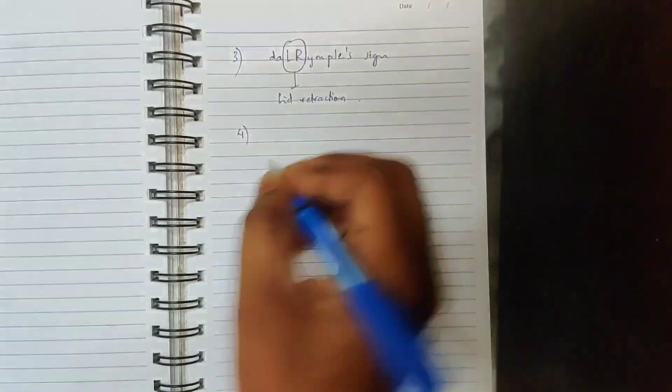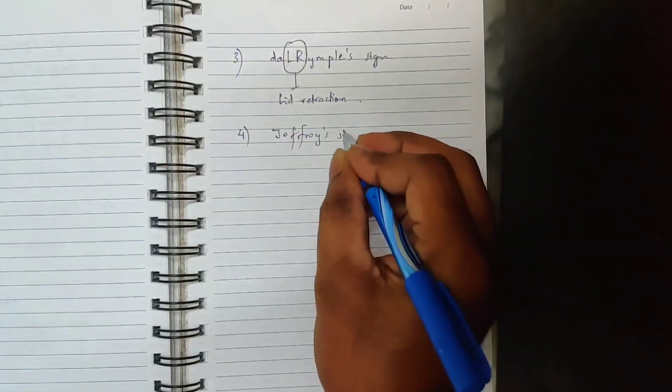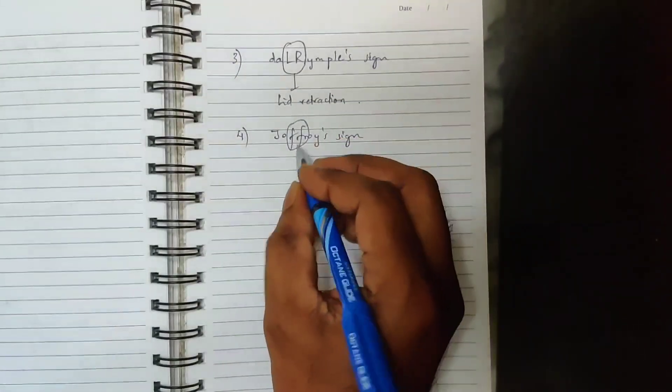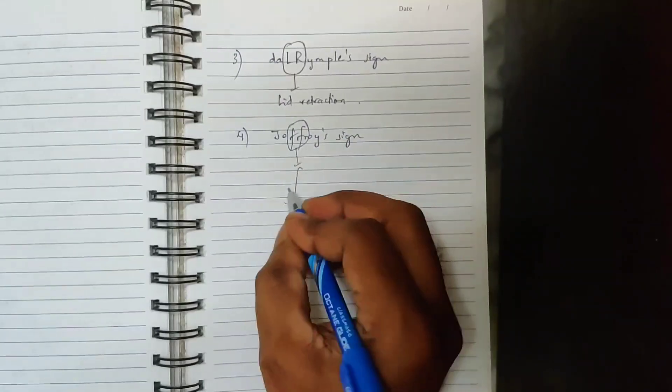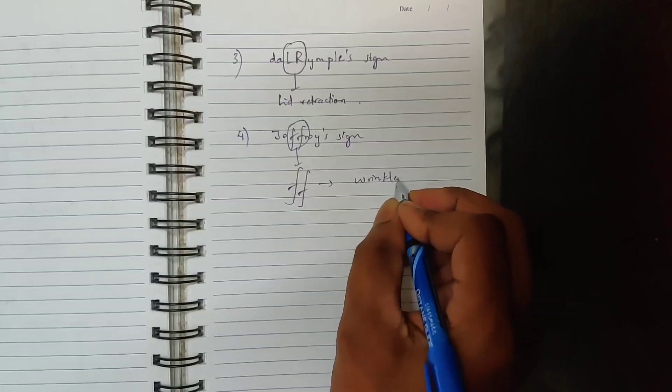The next sign is Joffroy sign. Here also, in the middle there are two F's, which look like wrinkles on the forehead.